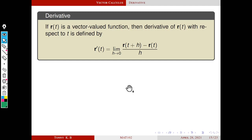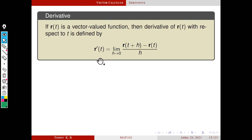This is the formal definition of derivative, similar to real-valued functions. If r is a vector-valued function, then the derivative of r with respect to the parameter t is defined by — denoted by r' — similar to our one-variable function: limit as h tends to 0 of [r(t+h) minus r(t)] divided by h.